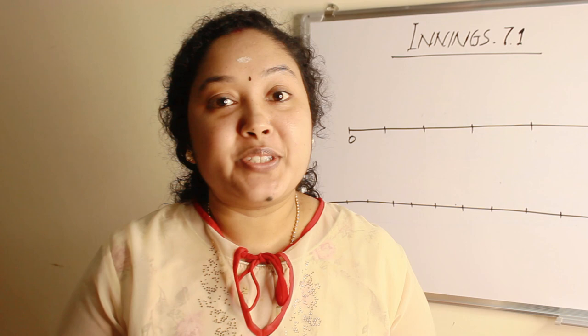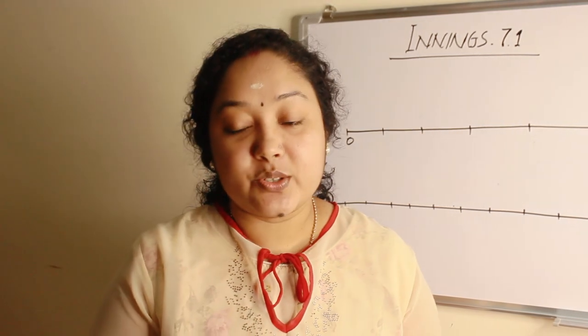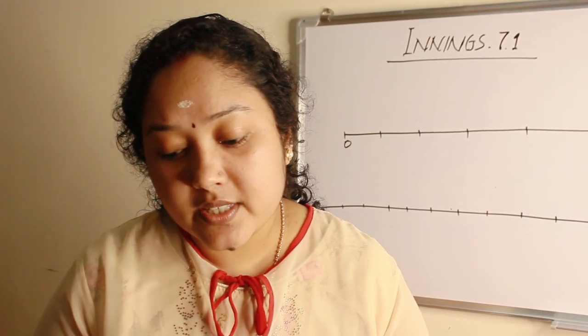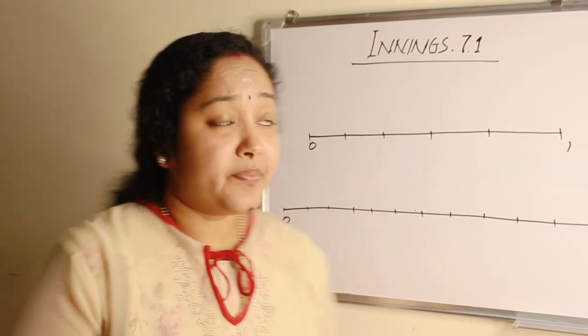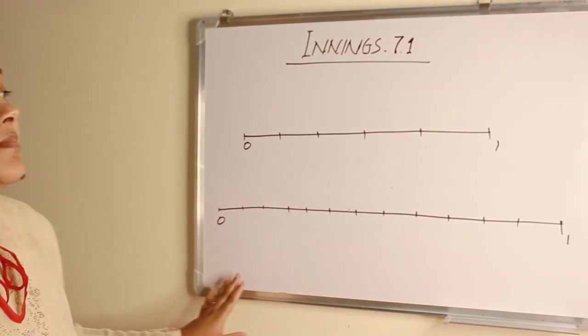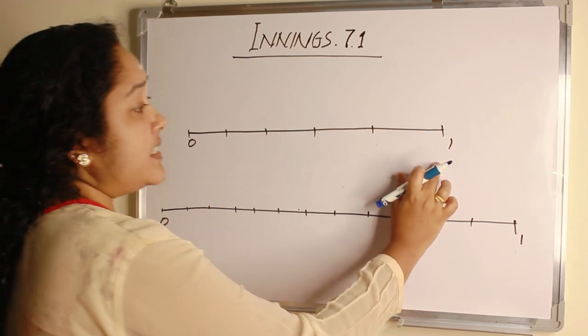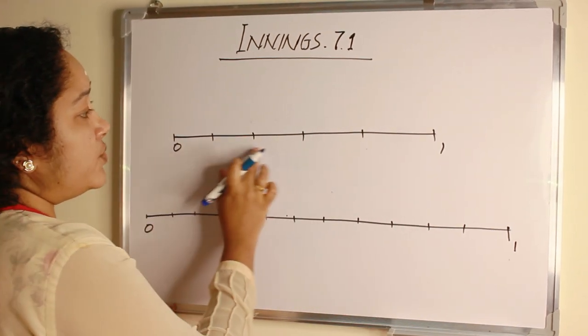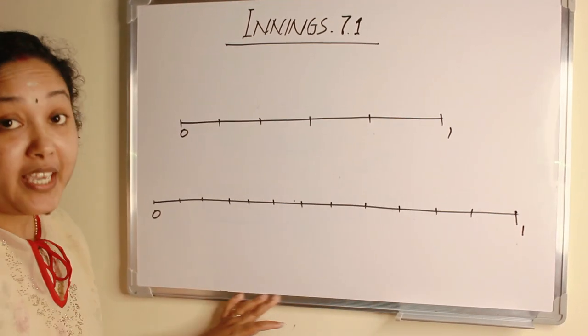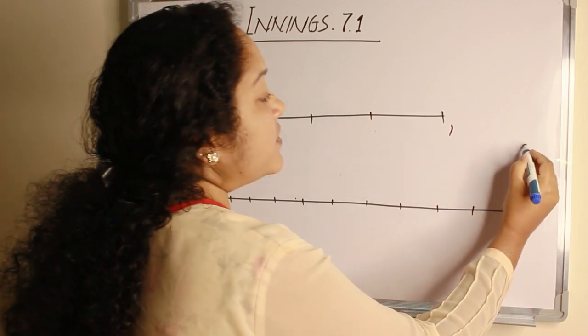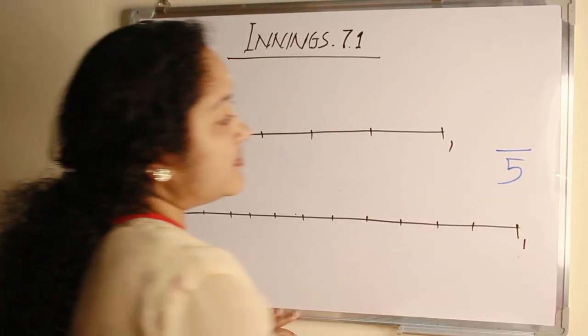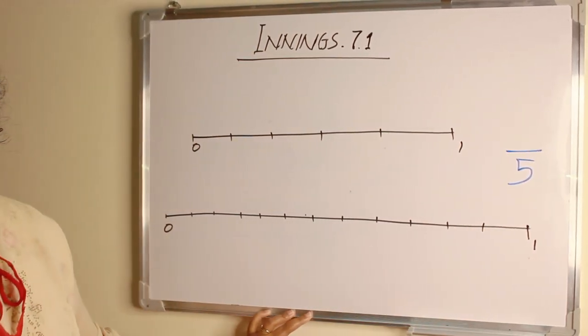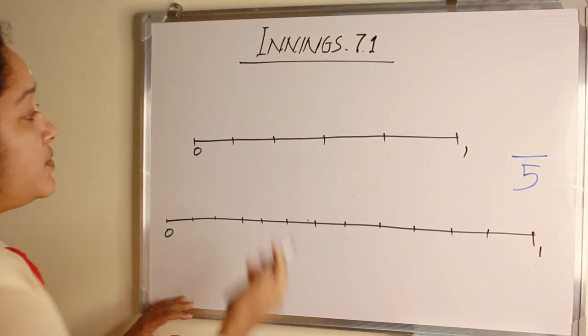Let's move to the exercise 7.1. The question is what fraction is shown on each of this number line? Here is the first question. 1 unit is divided into 1, 2, 3, 4, 5, 5 equal parts. So the denominator is 5. The marked part is 3.